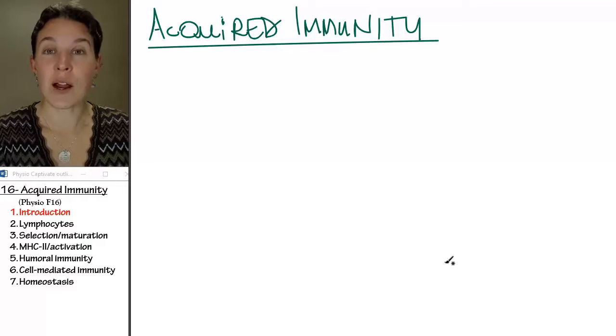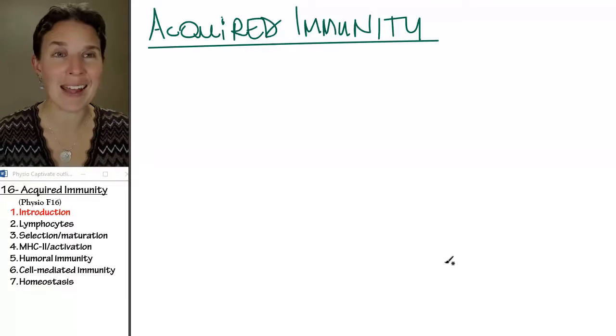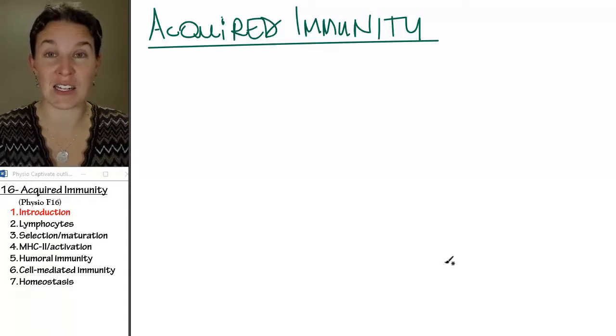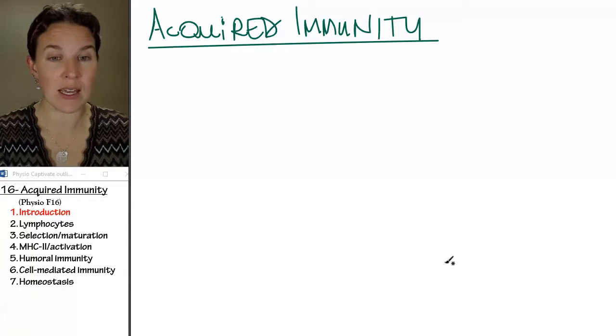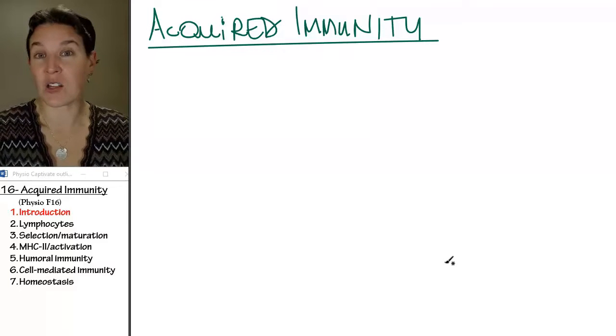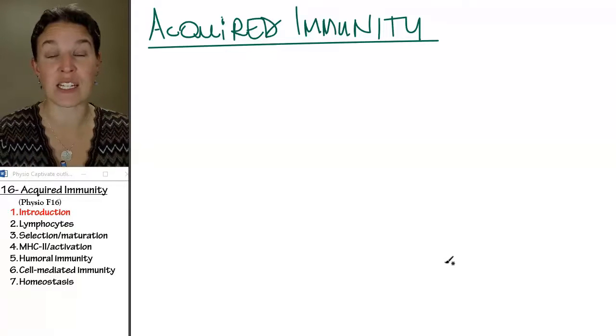The acquired immune response is mediated by lymphocytes. Now, we had one flavor of lymphocyte in the innate immune response, and that was the natural killer cells. But those guys make up just 2% of all lymphocytes, and everybody else is involved in acquired.